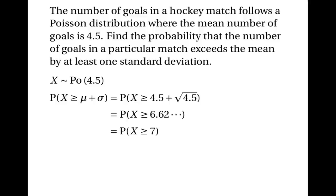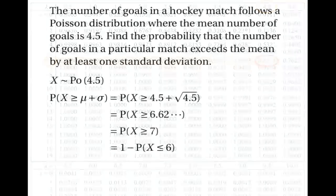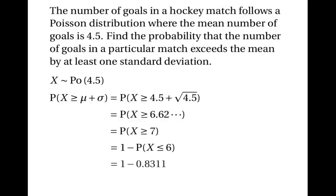We'll use the tables to work this out. Remember that the tables only tell us the probability that x is less than or equal to something. So the probability that x is greater than or equal to 7 is the same as 1 minus the probability that x is less than or equal to 6, because being 7 or more is the opposite of being 6 or less. We find where lambda is equal to 4.5 and look along the row where x equals 6 to find the probability 0.8311. So the answer is 1 − 0.8311 = 0.1689.